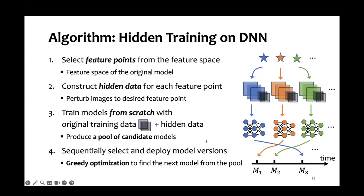During deployment, we sequentially select from the pool the model that is most robust against compound transferability attacks. This is done from greedy optimization.